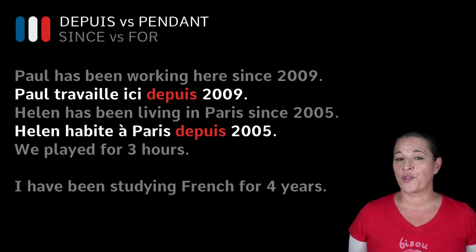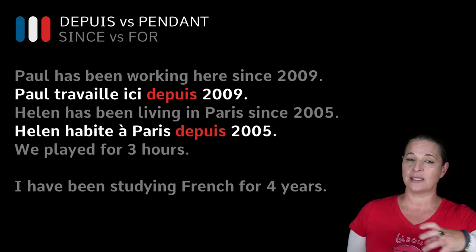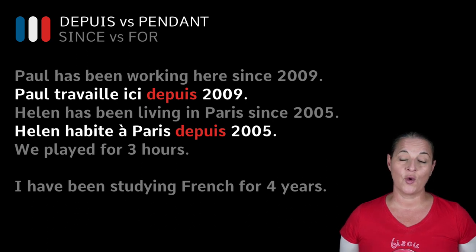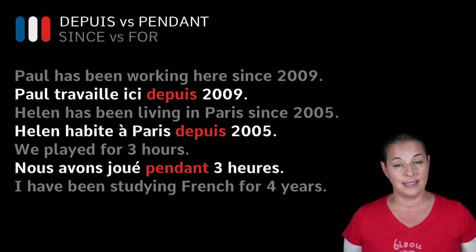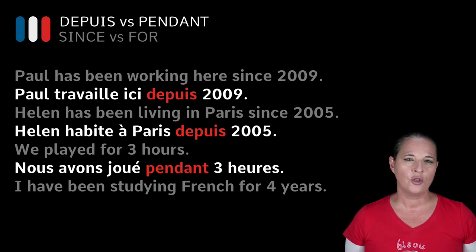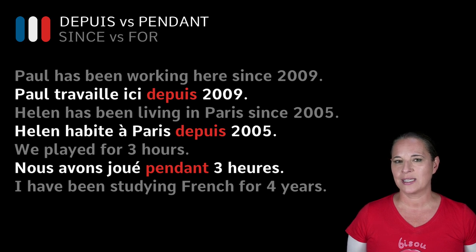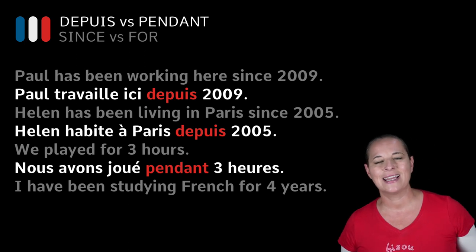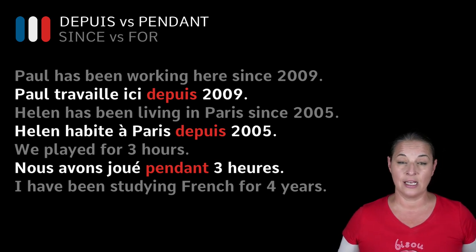'We played for three hours.' The word 'played' tells me it's an action that started in the past, but it's gone, done, over with. So we use 'pendant': 'nous avons joué pendant trois heures.' See the difference? It is not 'since,' because 'since' marks the beginning of an action that somehow carries on in time and is still going on.